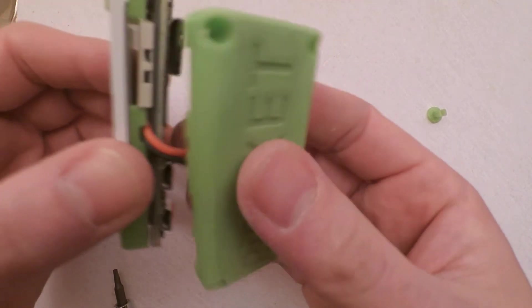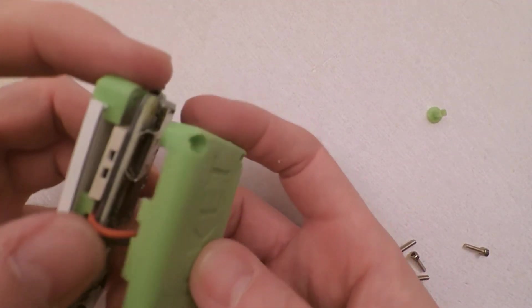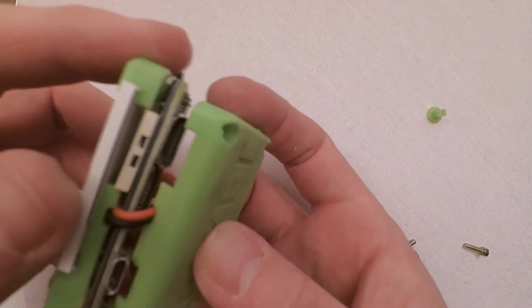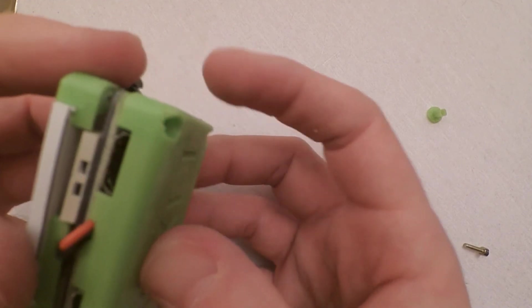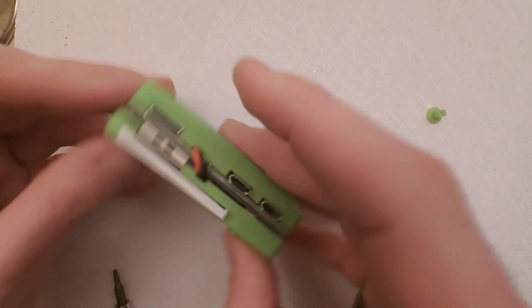And then the next tricky bit is to just fold all these cables down. Make sure they don't get trapped anywhere and there's a tiny gap you'll see you've got cutouts there for the USB, the HDMI, and for the cable as well. So that should all gently squeeze together.